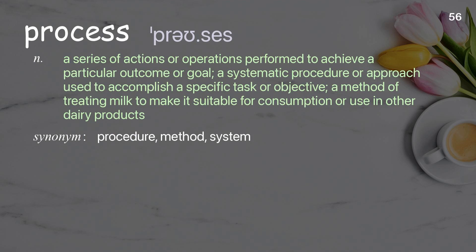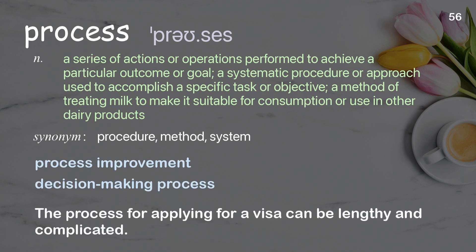Process: a series of actions or operations performed to achieve a particular outcome or goal; a systematic procedure used to accomplish a specific task; also a method of treating milk to make it suitable for consumption. Examples: process improvement; decision-making process. The process for applying for a visa can be lengthy and complicated.